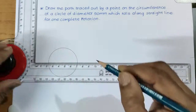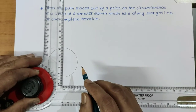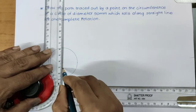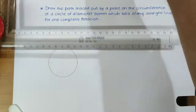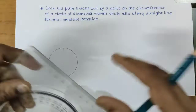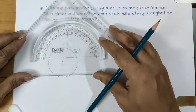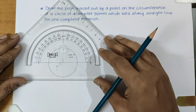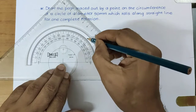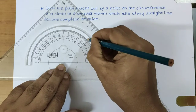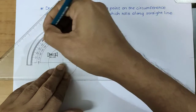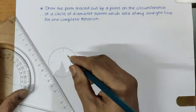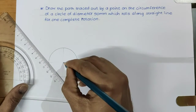As these are construction lines, we have to draw these lines as thin continuous lines. 8 equal parts means 45 degrees each. So we mark divisions at 45, 45, 45 degrees.